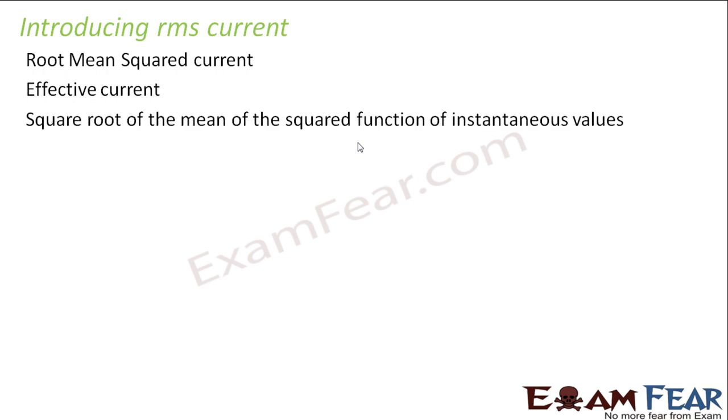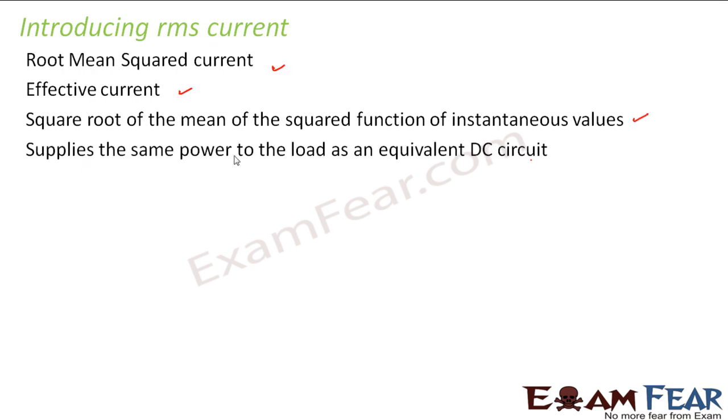So what is RMS current? It should be easy to understand now because you are already familiar with RMS voltage. RMS current is nothing but root mean squared current. It is the effective value of alternating current — the square root of the mean of the squared function of instantaneous values — and it supplies the same power to the load as an equivalent DC circuit.